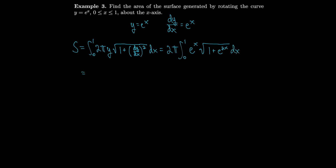That becomes 2π times the integral from 1 to e of the square root of 1 plus u². We let u = eˣ: when x = 0, eˣ = 1; when x = 1, eˣ = e. And we sub on the inside — the derivative of eˣ is eˣ, so that gets rid of the eˣ factor. It's a pretty natural substitution.